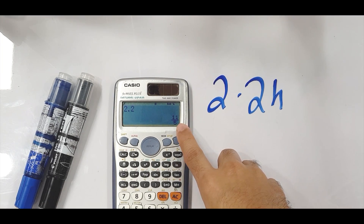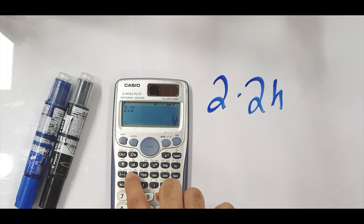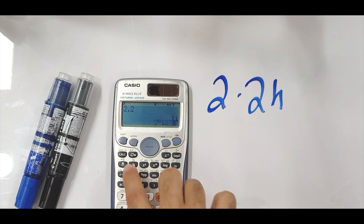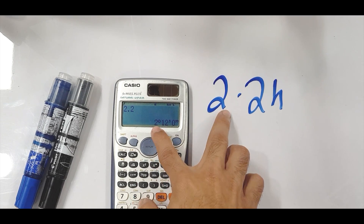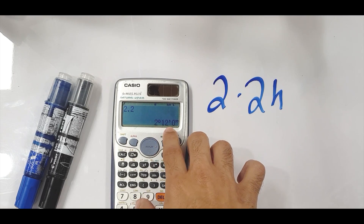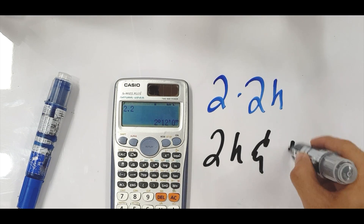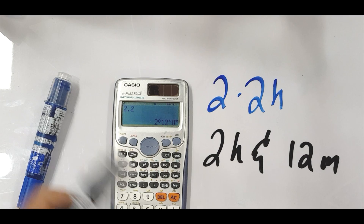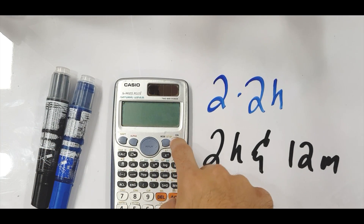I want to know how much 2.2 is in hours and minutes. I'm going to press a magic button — it's just below the square root sign — called the degrees, minutes, and seconds button. As soon as I press it, there you go: 2.2 is equal to two hours, 12 minutes, and zero seconds. So 2.2 hours is basically two hours and 12 minutes. And there's more amazing stuff you can do with this button — let's figure that out.